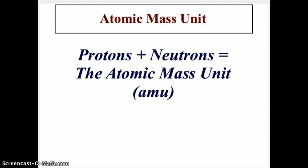The electrons are so light, have very minimal mass, so therefore they are not included in the atomic mass unit. So protons plus neutrons housed in the nucleus equal the atomic mass unit.